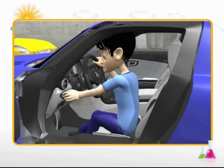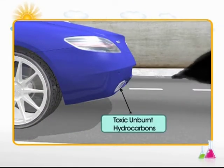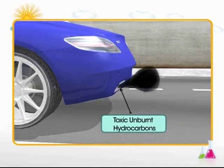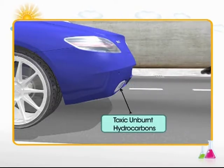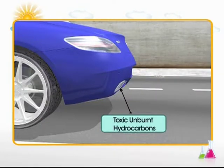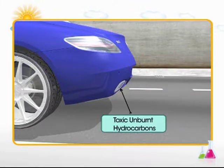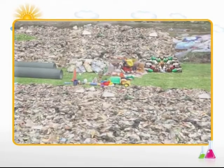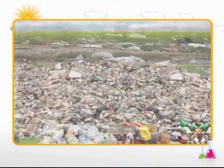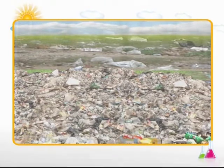Let us learn about organic gaseous pollutants like unburned hydrocarbons. When engines idle or are poorly tuned, the hydrocarbons present in the fuel do not burn completely and escape into the atmosphere as toxic unburnt hydrocarbons. Methane is another odourless and colourless organic gas. It is released through bacterial activity from decaying vegetable and animal waste and garbage buried in landfills.